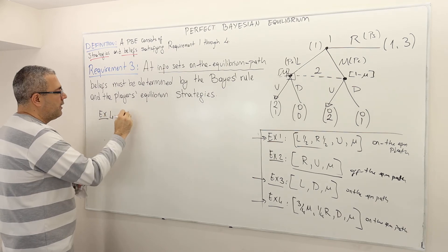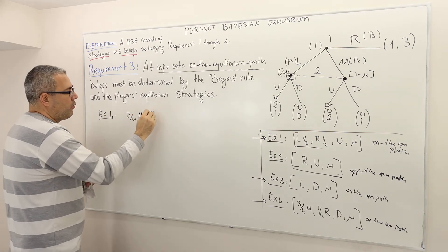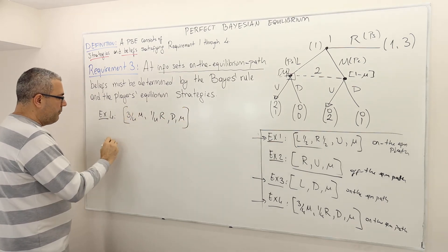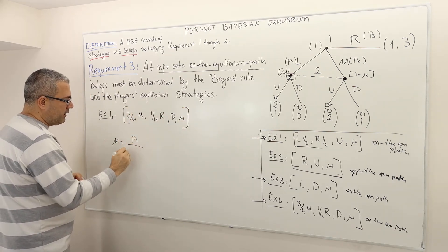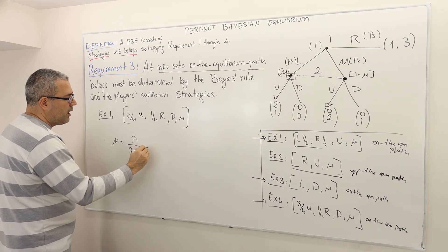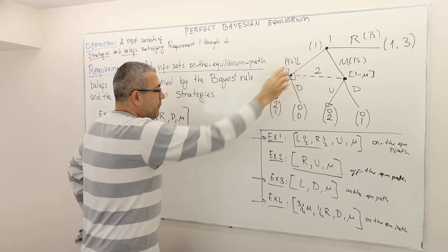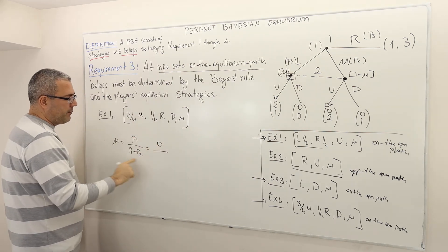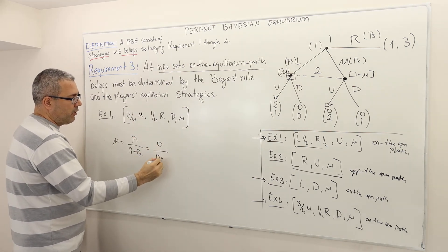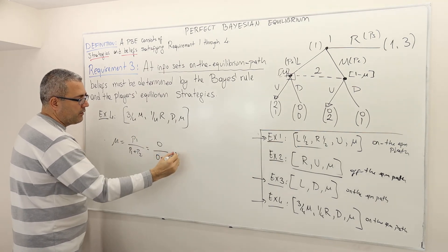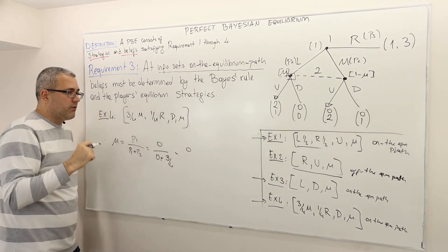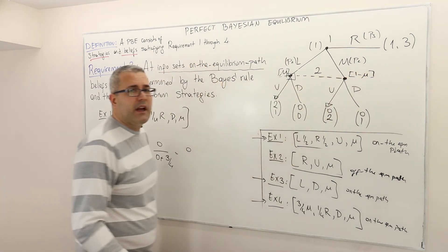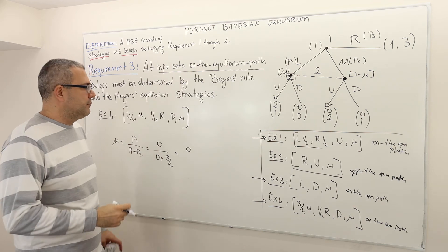Example four: three-over-four M, one-over-four R, D, mu. Mu equals P1 divided by P1 plus P2. What is P1? The probability that my opponent is playing left — it's zero. Divided by P1 plus P2, which is zero plus three-over-four. So mu is zero. Therefore, you should believe you are actually at this specific decision node — that is the consistent belief.